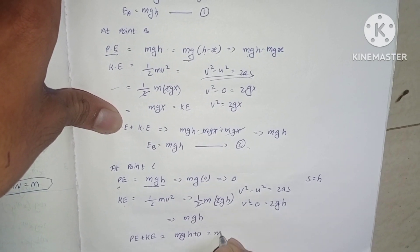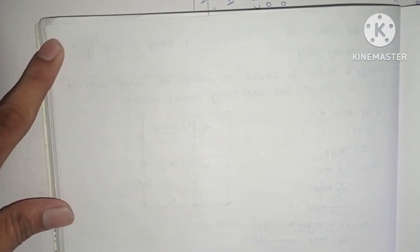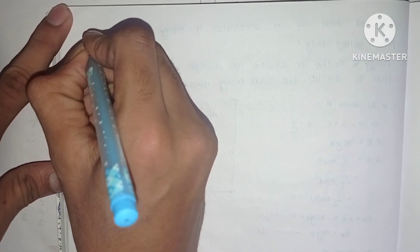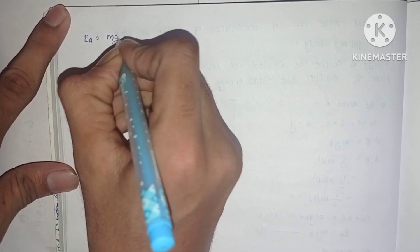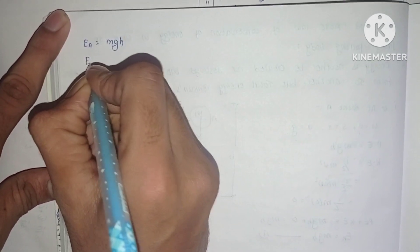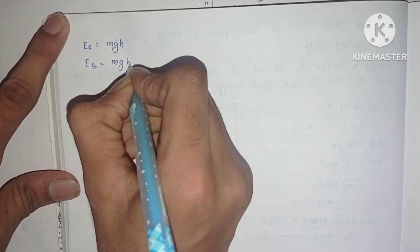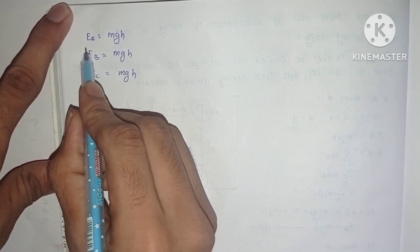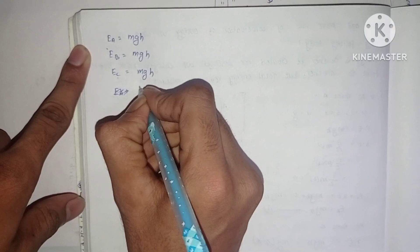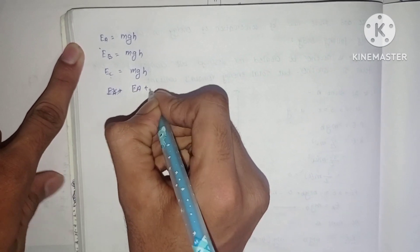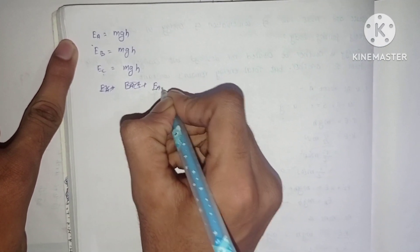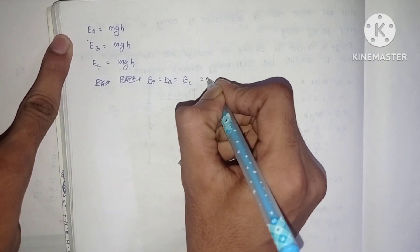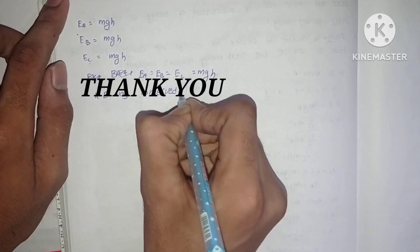From equations 1, 2, and 3: E_A = mgh, E_B = mgh, E_C = mgh. Therefore E_A = E_B = E_C = mgh, which proves the law of conservation of energy — the total mechanical energy remains constant at every point during free fall.